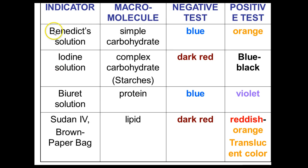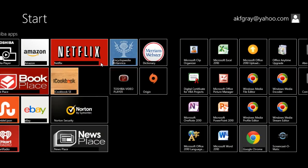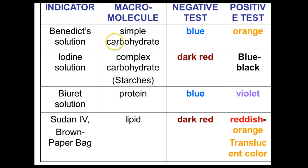Here are our indicators. We have Benedict's solution, which tests for simple carbohydrates or monosaccharides. A negative test would be blue, while a positive test would look orange. We have iodine solution, which tests for complex carbohydrates, polysaccharides, or starches. It turns a dark red for a negative test and a blue-black for a positive test.